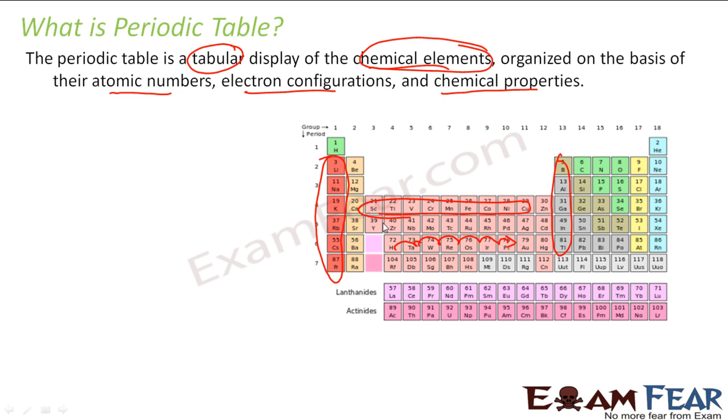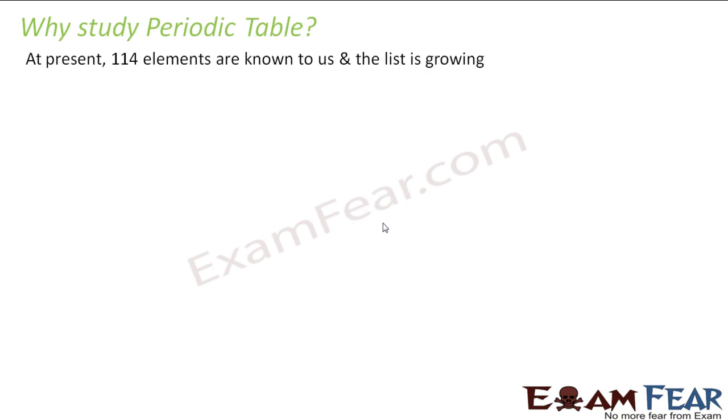Why should we study this? We have 114 elements known as of today and the list is increasing, because every year or so chemists find new elements. We have to somehow arrange these elements because handling 114 elements is a big task - remembering the property of each element and what kind of reaction a particular element undergoes is difficult if we don't have any tabular form to represent them.